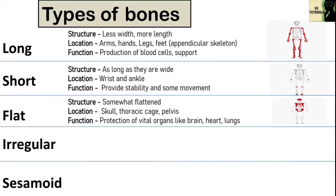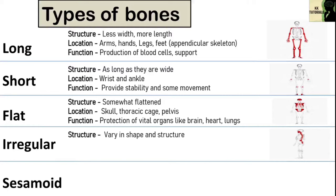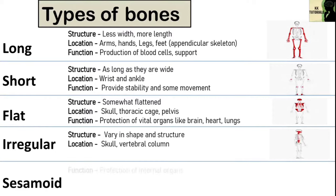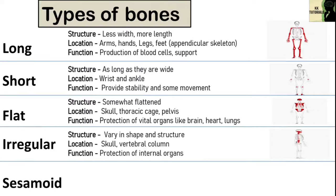Irregular bones vary in shape and structure and therefore do not fit into any other category. They often have a fairly complex shape. They are present in the vertebral column and in the skull. They protect internal organs. For example, the bones in the vertebral column called vertebrae protect the spinal cord, and the irregular bones of the pelvis protect organs in the pelvic cavity.